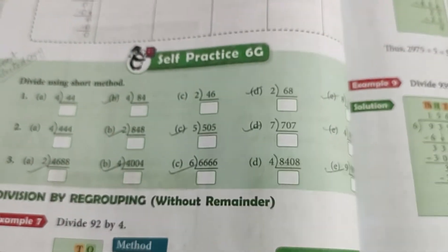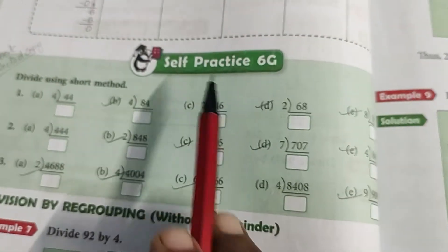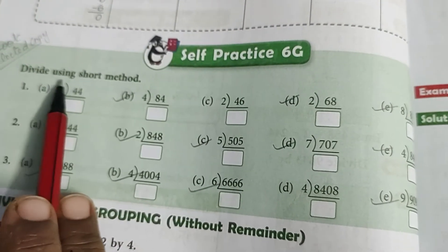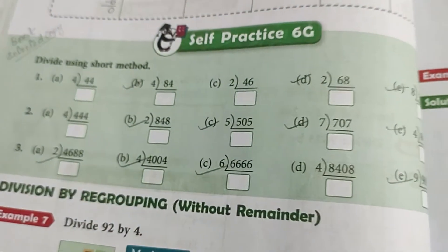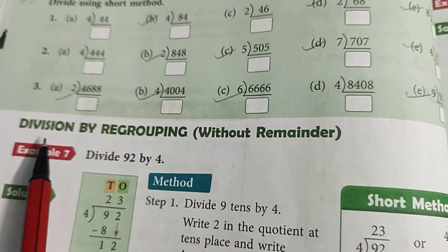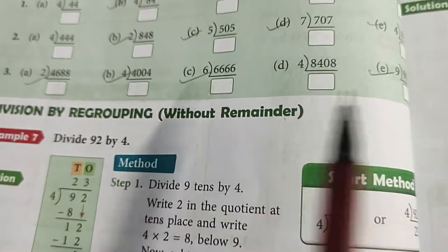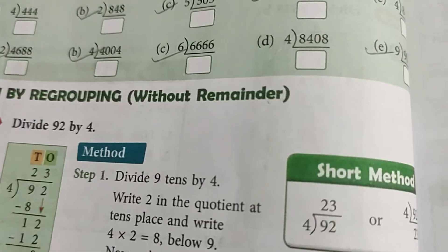Good morning students. Yesterday we finished our Self Practice 6G in which we divided numbers using short methods. Now today we will do the division by regrouping without remainder.